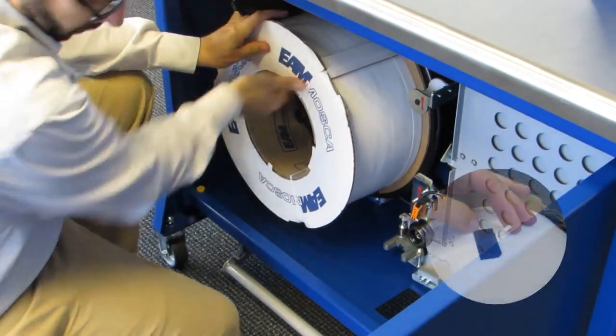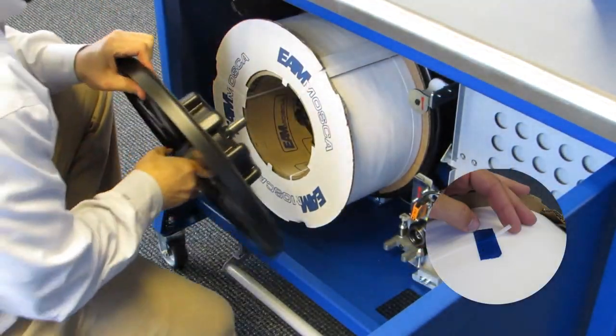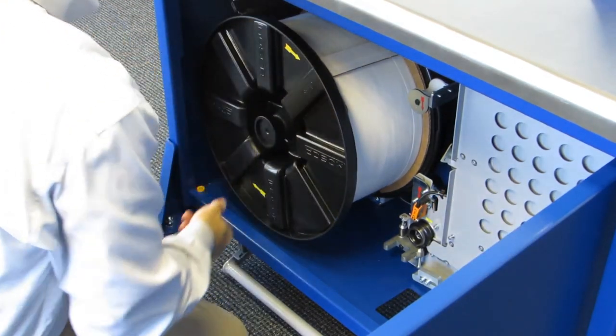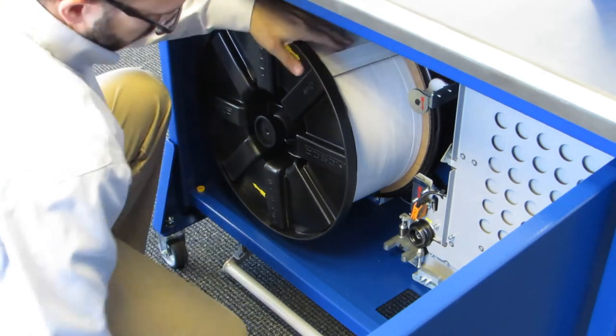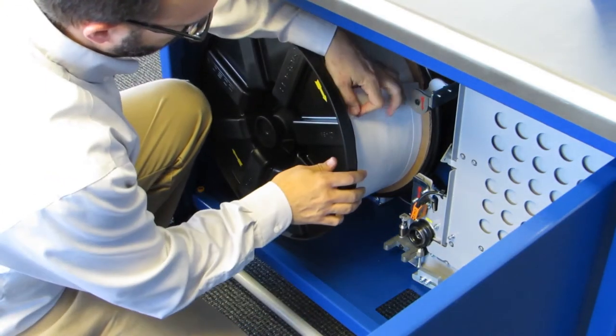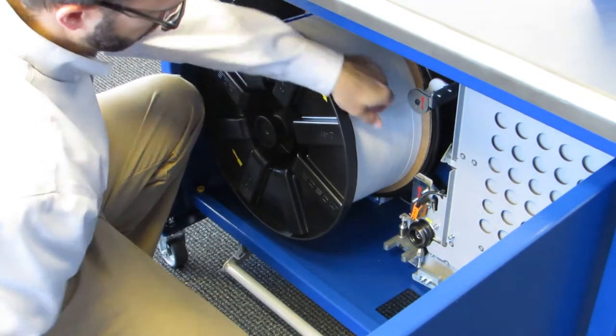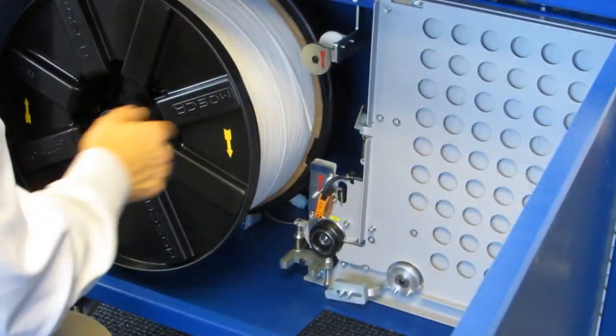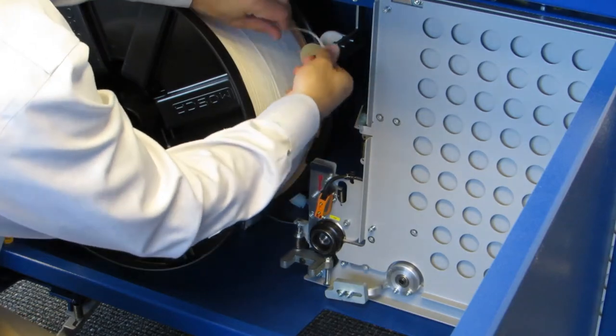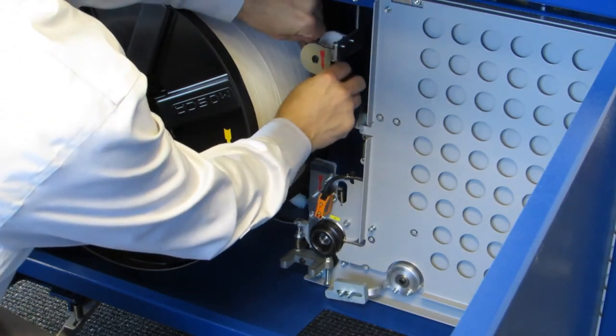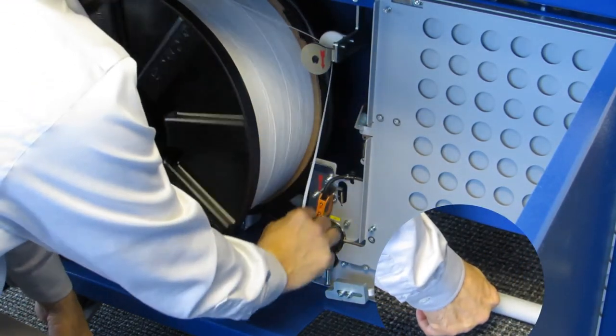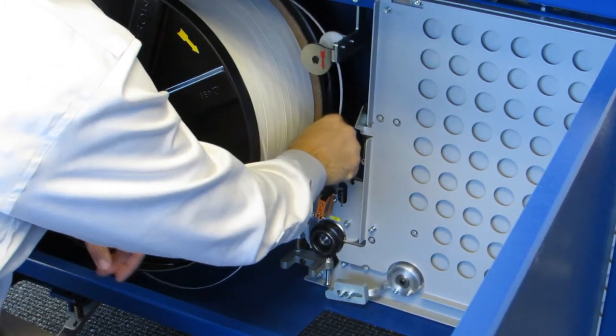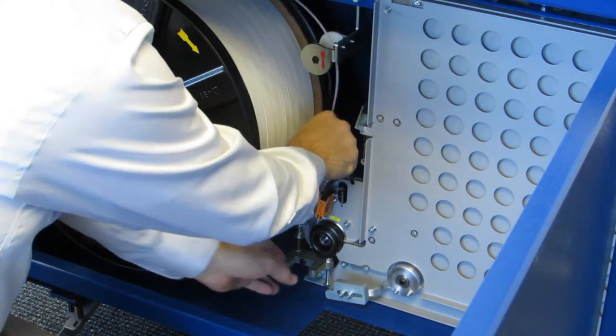Install a new strap spool on the dispenser making sure it unwinds in the direction of the yellow arrows. Remove all protective shipping materials from the new strap spool. Guide the strap end over the first roller and down into the guide marked with the red arrow. Press on the foot bar to release and unroll more strap from the spool as needed. Continue inserting strap into the guide area until resistance is felt.